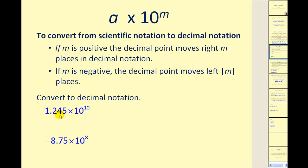In the first example, we're multiplying by a positive power of 10, so in decimal notation this number will be larger than A. To find that number, we have to move the decimal point right 10 places. Starting with the value of A, after moving the decimal three places we reach the end of the digits, and we have to move it seven more places to the right — so we need to add seven zeros to this number.